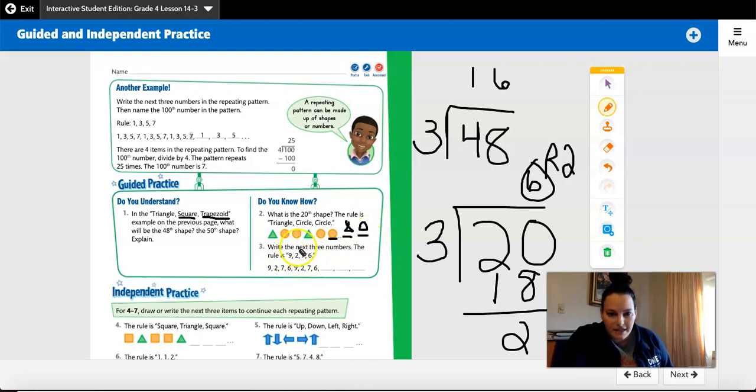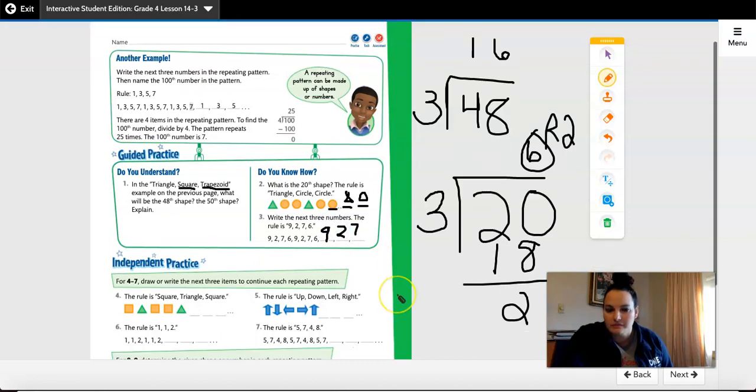Okay. Number three, write the next three numbers. The rule is 9, 2, 7, 6, 9, 2, 7, 6, 9, 2, 7, 6. So my next one would be 9, 2, 7.